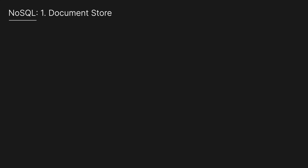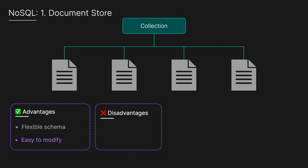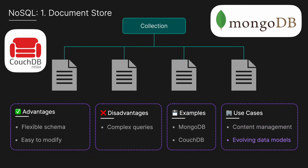There are four main types of NoSQL databases. The first is a document store, which stores data as documents — often JSON — each with its own structure. The advantages include a flexible schema and the ability to easily modify and update documents. The disadvantages include that complex queries can be more challenging to implement than in SQL. Examples include MongoDB and CouchDB, and ideal use cases include content management systems, blogging platforms, and rapidly evolving data models.